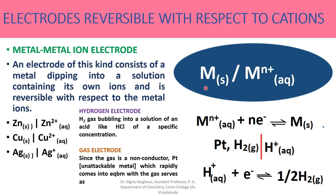To summarize metal–metal ion electrodes: a metal dipping into a solution of its own ions, such as zinc in zinc sulfate, copper in copper sulfate, or silver in silver chloride.